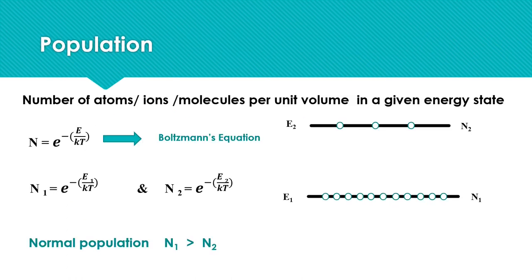Number of atoms or ions or molecules per unit volume in a given energy state is known as population of that state. The population N of an energy level E depends upon temperature and is given by N = e^(-E/kT). Here, k represents Boltzmann's constant and T the absolute temperature.